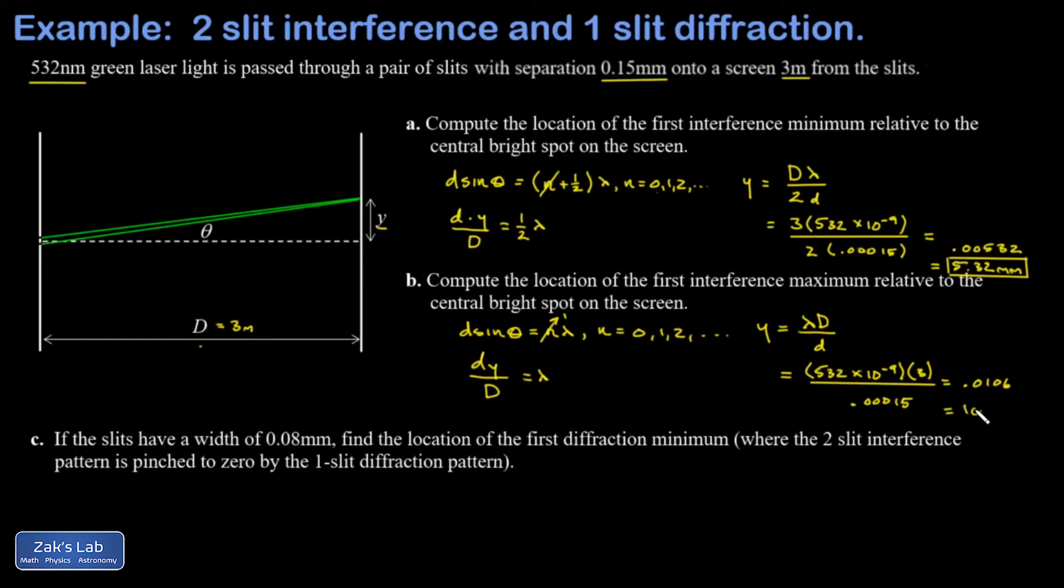Finally, in part c, we're asked to consider the width of the slits themselves. Each slit has to have some finite width, and we already know that a slit with a finite width is going to produce a diffraction pattern. So whenever we look at interference in the lab, we're actually looking at interference and diffraction at the same time. And we're asked for the location of the first diffraction minimum.